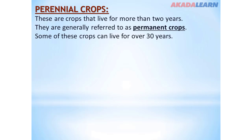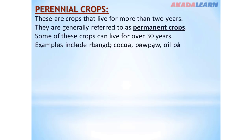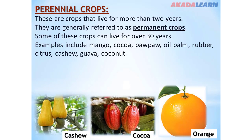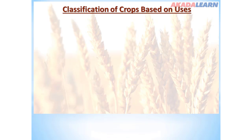Some perennial crops can live for over 30 years. Examples include mango, cocoa, oil palm, rubber, citrus, cashew, guava, and coconuts. The next category is classification of crops based on their uses.